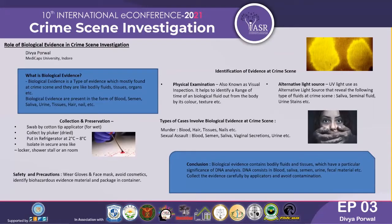Identification of biological evidence at a crime scene involves mainly two types of identification or examinations. The first is physical examination, and the second is alternative light source. In physical examination, we observe evidence physically without any instruments — it is also known as visual inspection. It means identifying evidence with the naked eye, and it helps identify a range of biological fluids from the body by their colour and texture.